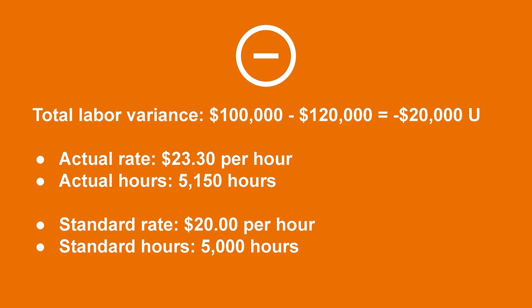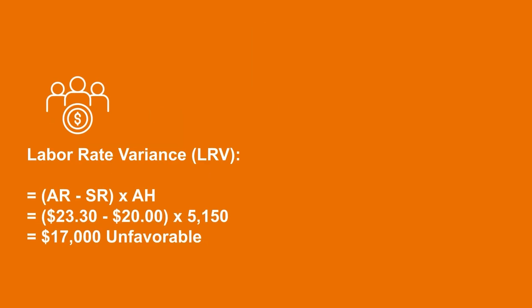The actual labor rate was $23.30 per hour, the actual hours were 5,150 hours, the budgeted rate was $20 per hour, and the budgeted standard hours were 5,000 hours. The labor rate variance is the difference between the actual amount paid to direct laborers and the amount that should have been paid based on the budget. In this case, that would be $23.30 per hour minus the $20 standard rate, times the actual number of hours — 5,150 hours — resulting in an approximately $17,000 unfavorable variance, since the hourly wage rate ended up being higher than expected.